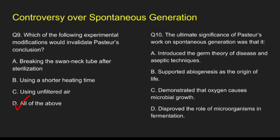Question 10: The ultimate significance of Pasteur's work on spontaneous generation was that it — Option A, introduced the germ theory of disease and aseptic techniques; Option B, supported abiogenesis as the origin of life; Option C, demonstrated that oxygen causes microbial growth; Option D, disproved the role of microorganisms in fermentation. The correct answer is option A. Louis Pasteur laid the foundation for the germ theory, sterilization, and aseptic techniques in medicine and microbiology. That concludes the controversy over spontaneous generation.